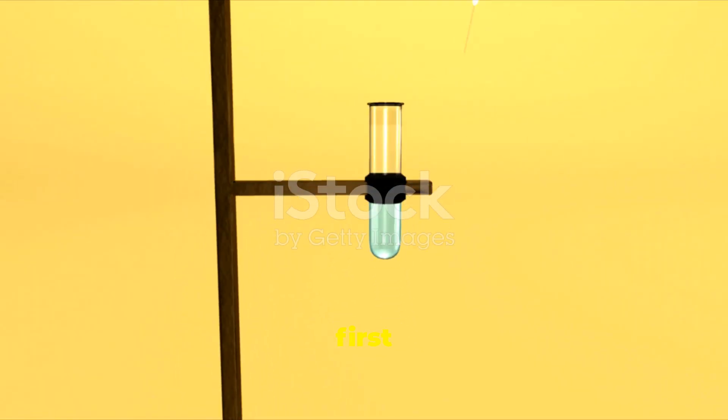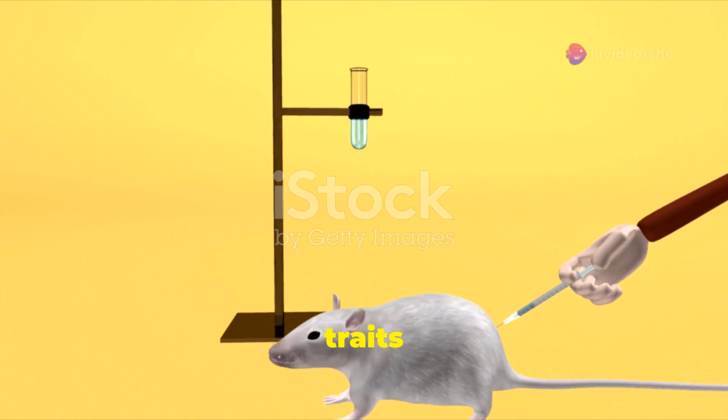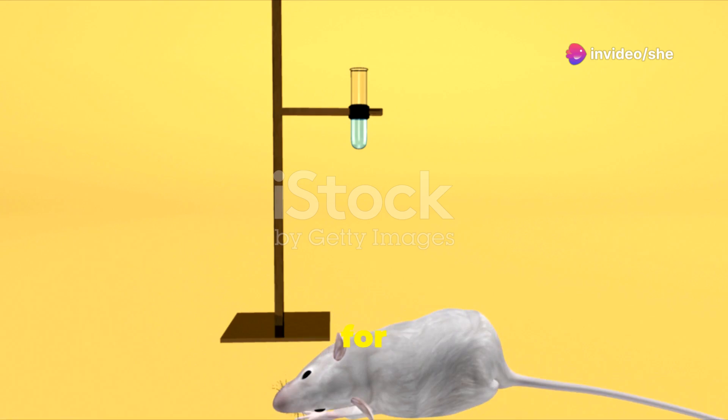Parental cross. The first step is to cross two pure-breeding individuals, one homozygous dominant for both traits and the other homozygous recessive for both traits.